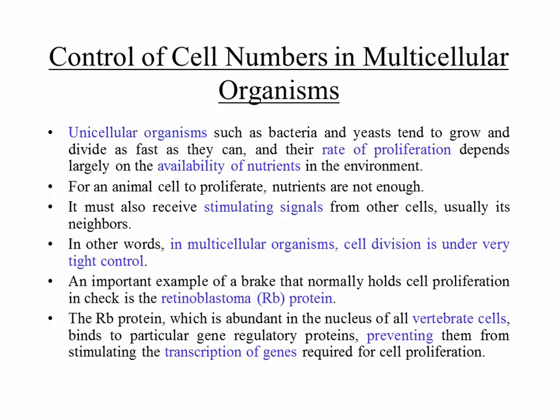How are cell numbers in a multicellular organism controlled? Bacteria and yeast, which are unicellular, will just keep dividing if given enough food. However, for an animal cell, just giving it food is not enough — it must also receive stimulating signals from other cells, usually its neighbors. In multicellular organisms, cell division is under very tight control.